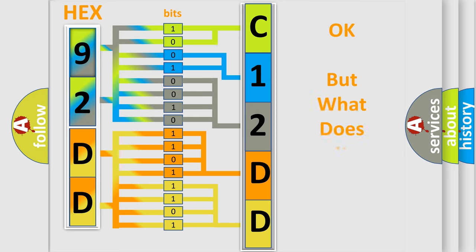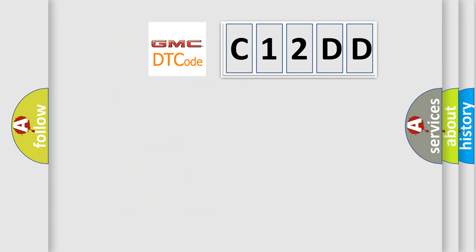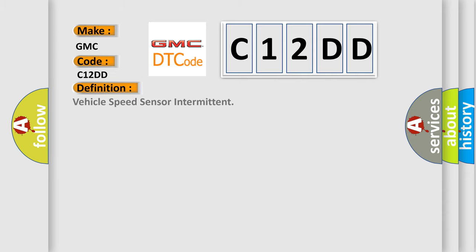We now know in what way the diagnostic tool translates the received information into a more comprehensible format. The number itself does not make sense to us if we cannot assign information about what it actually expresses. So, what does the diagnostic trouble code C12DD interpret specifically for GMC car manufacturers? The basic definition is: Vehicle speed sensor intermittent.